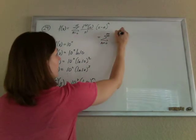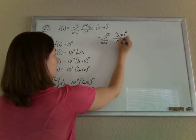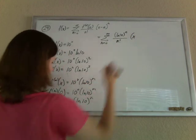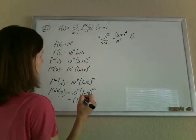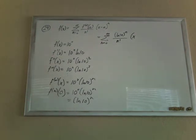So this will be ln of 10 to the n over n factorial times... oopsie. That's bad. That's bad.